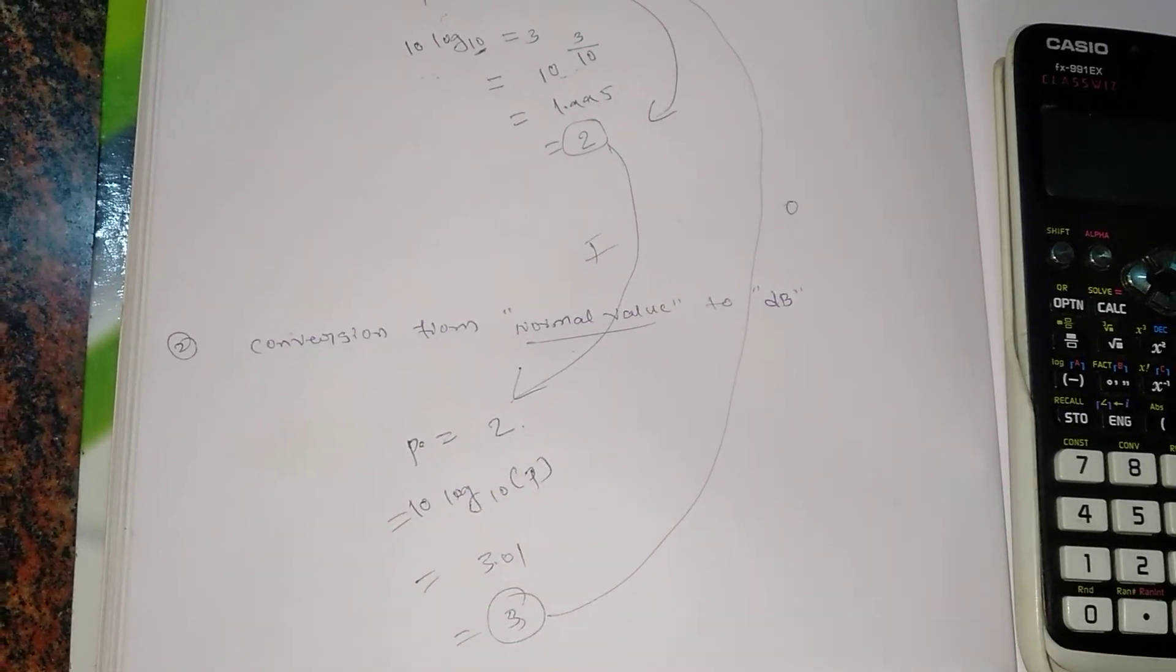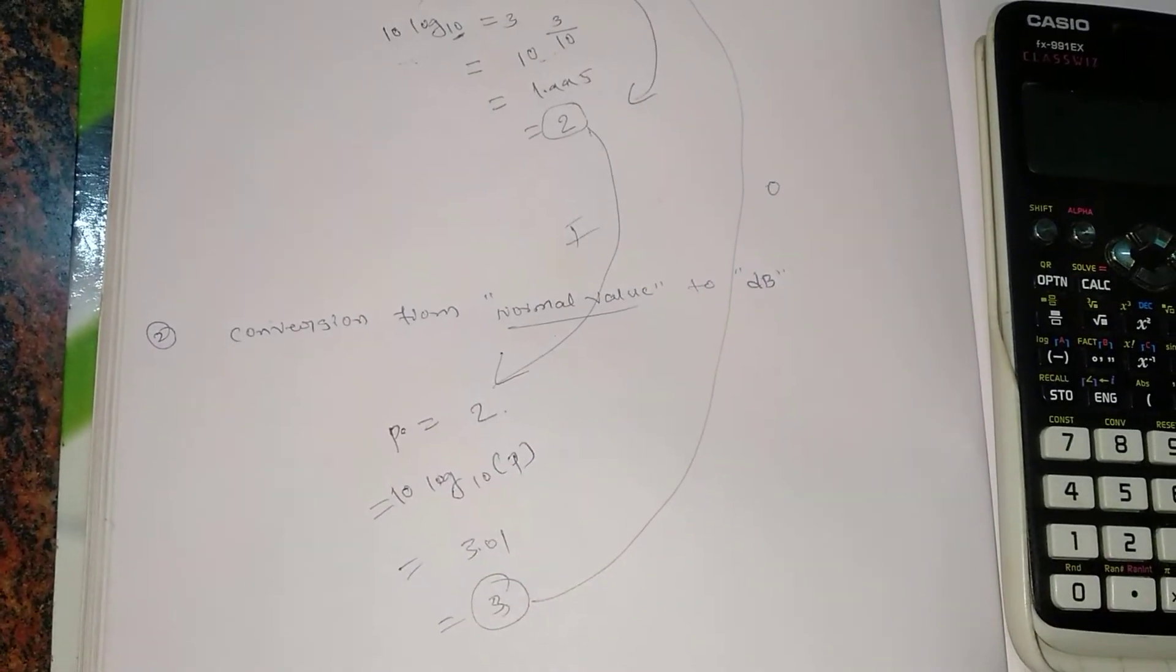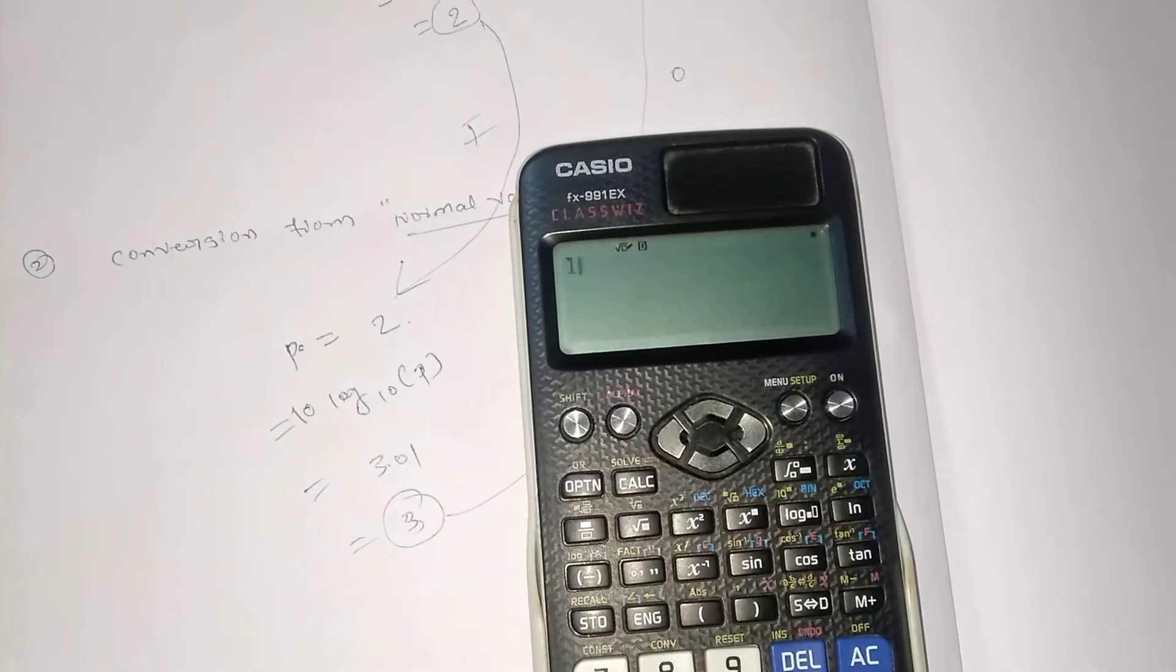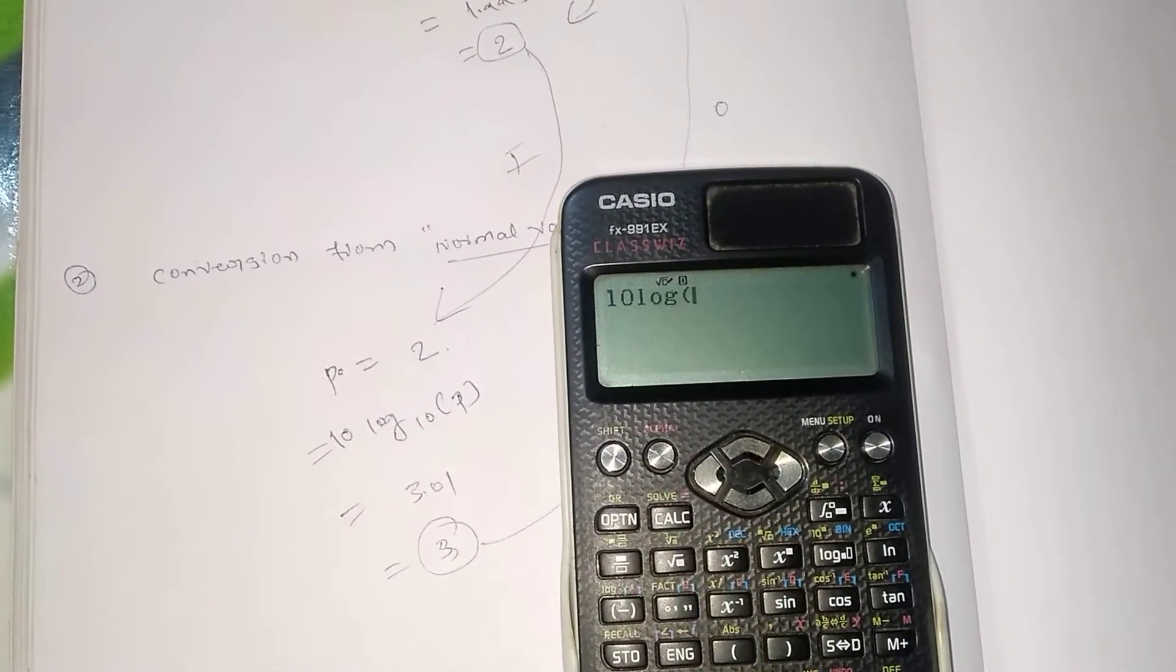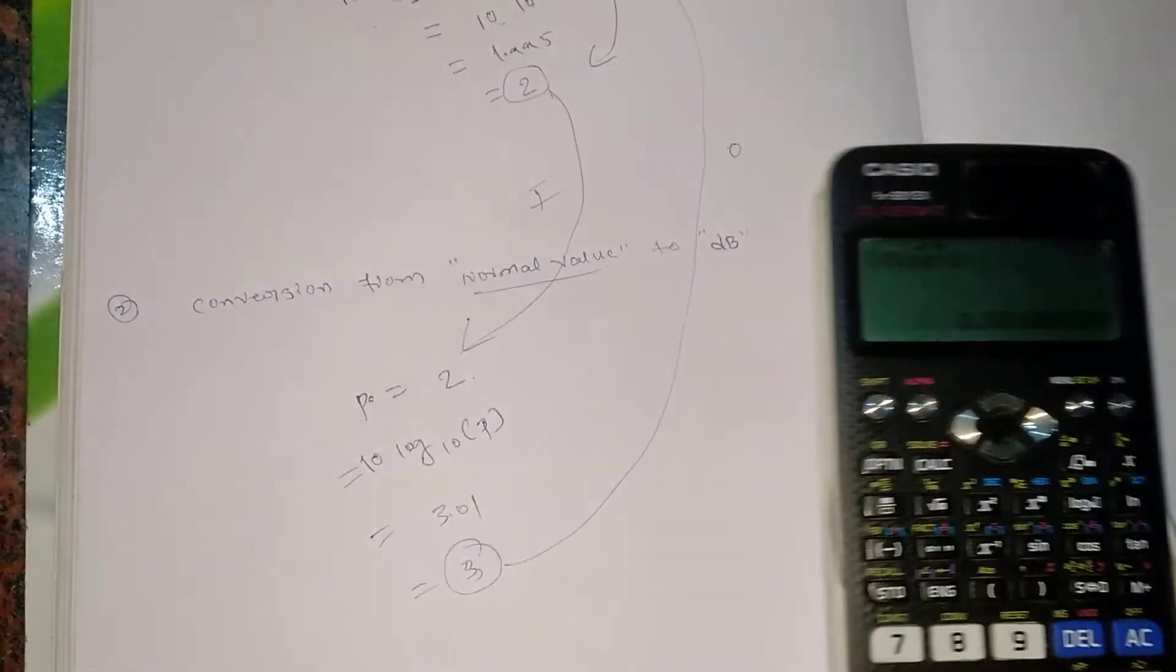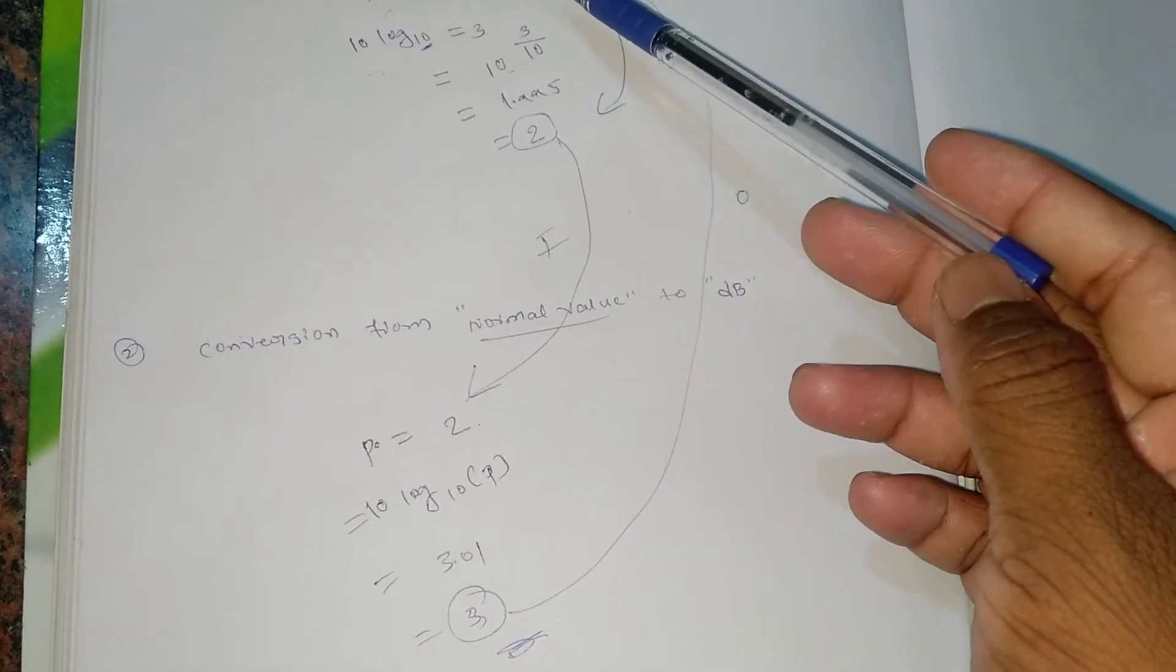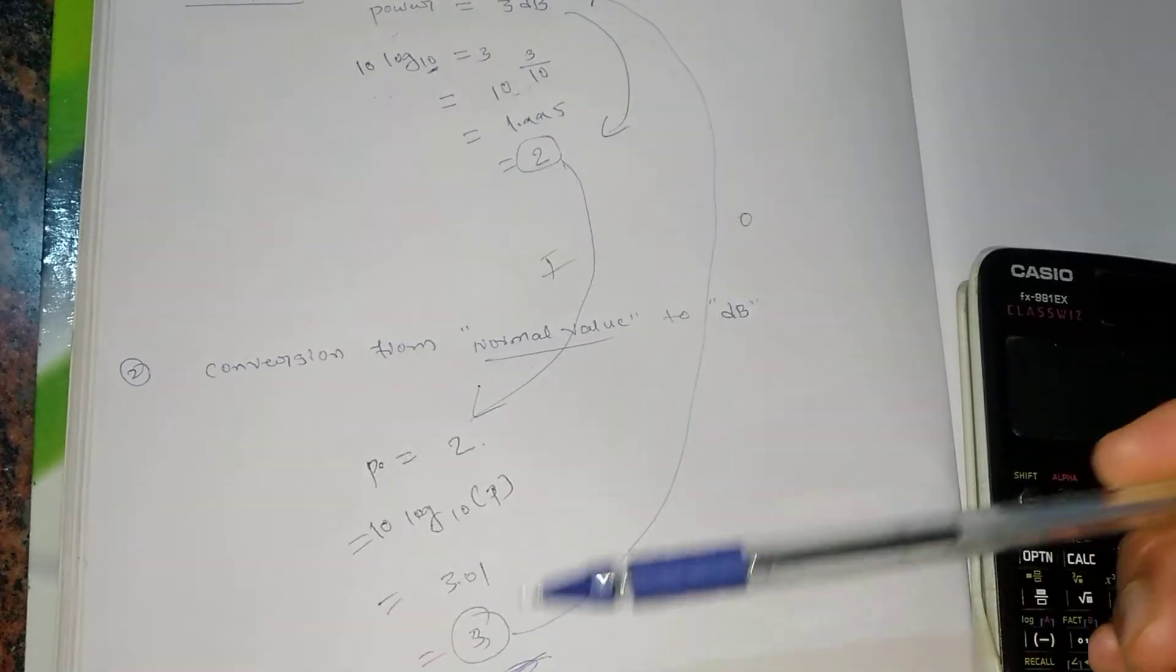Power is again taken as 2, and it's very simple - you need to just multiply with 10 log 10. I'm equating to 10 log 10, multiplying directly with 10 log 10 of P. So 10 log 10 of 2 is 3.0, which is the same as 3. I'll just round it up and you can see this is same as the previous 3 dB.